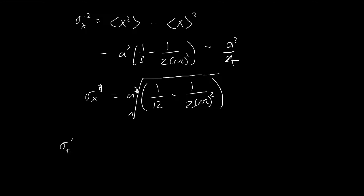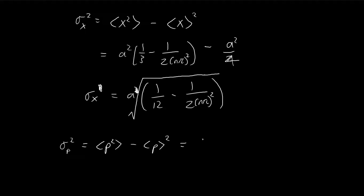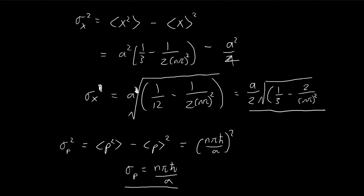We can do the same thing for momentum. The variance is the expected value of p squared minus the expected value of p, all squared. Since the expected value of p is zero, we can ignore that term. Essentially all we have is (nπħ/a) squared. Taking the square root to find the standard deviation gives nπħ divided by a. I'm going to pull out a factor of 2 from the standard deviation of x expression to make it easier to see the uncertainty principle — pulling out the 2 and multiplying a 4 inside gives 2(nπ)² inside the square root.